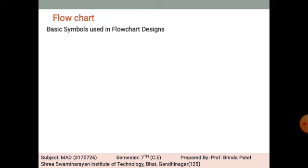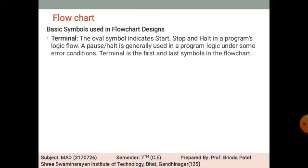Let's see the basic symbols used in flowchart design. First is the terminal, which is represented by an oval symbol. This oval symbol represents start, stop, and hold in a program's flow.